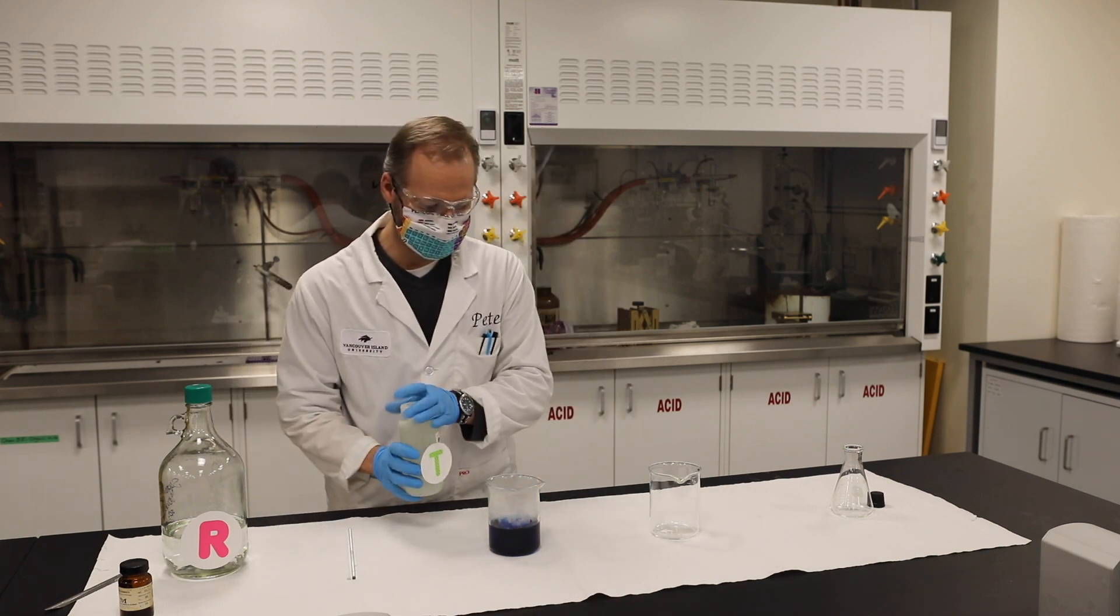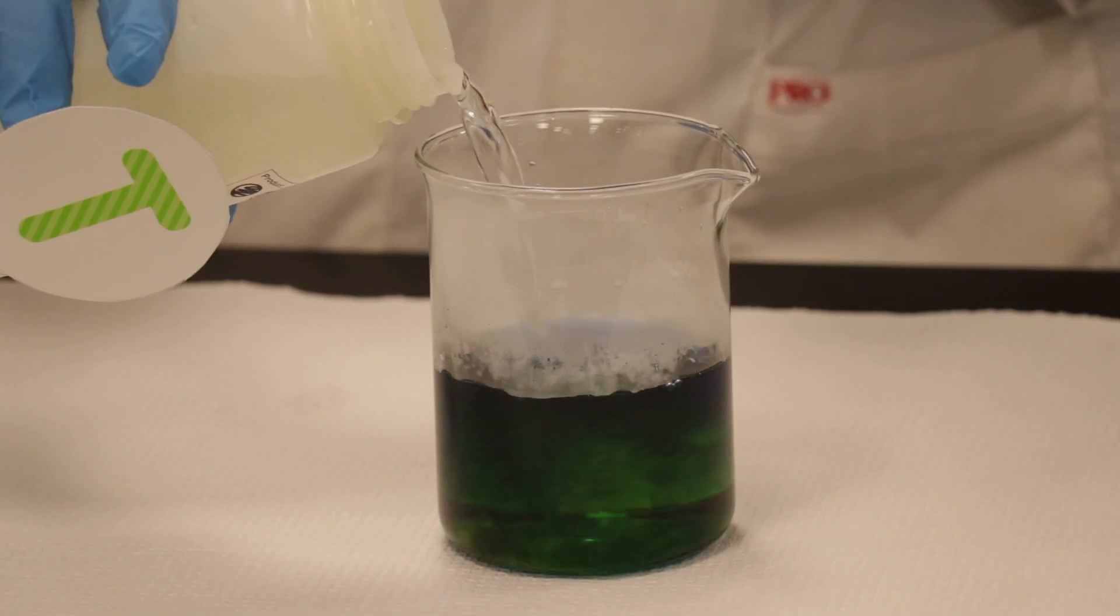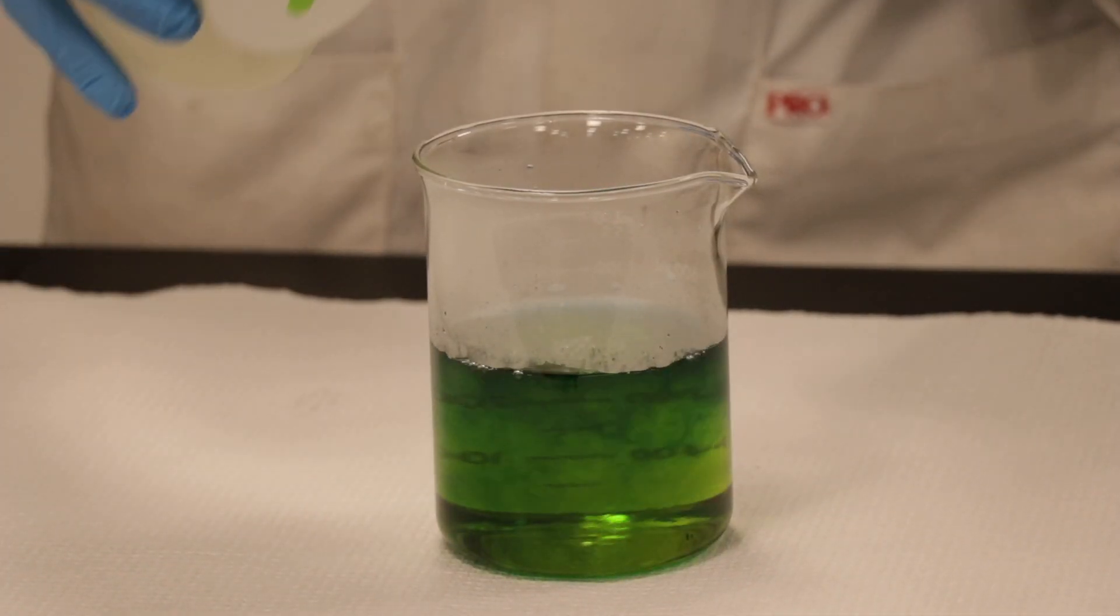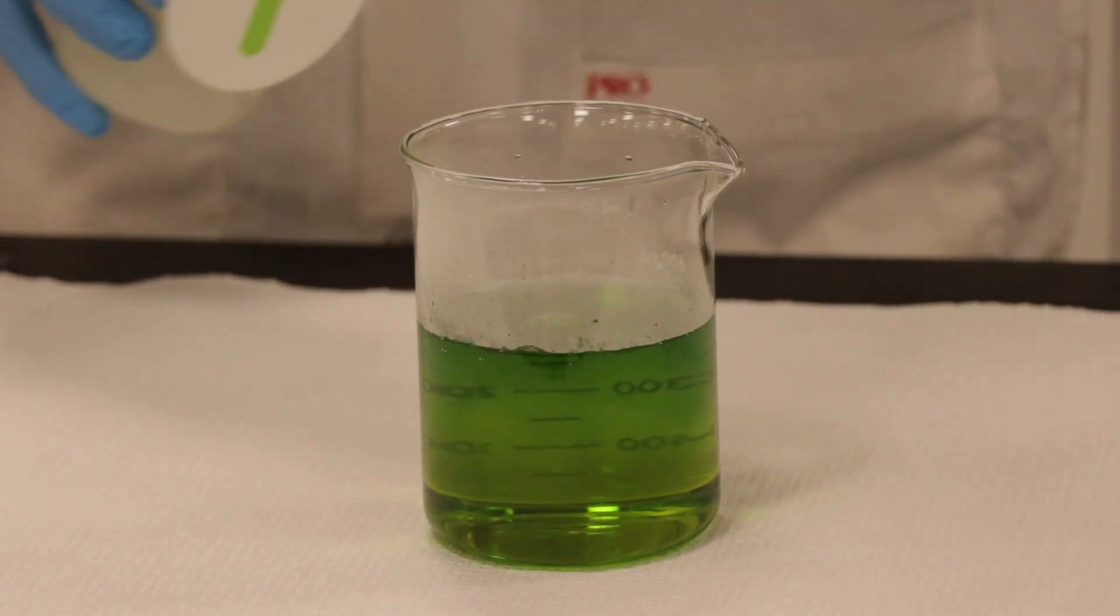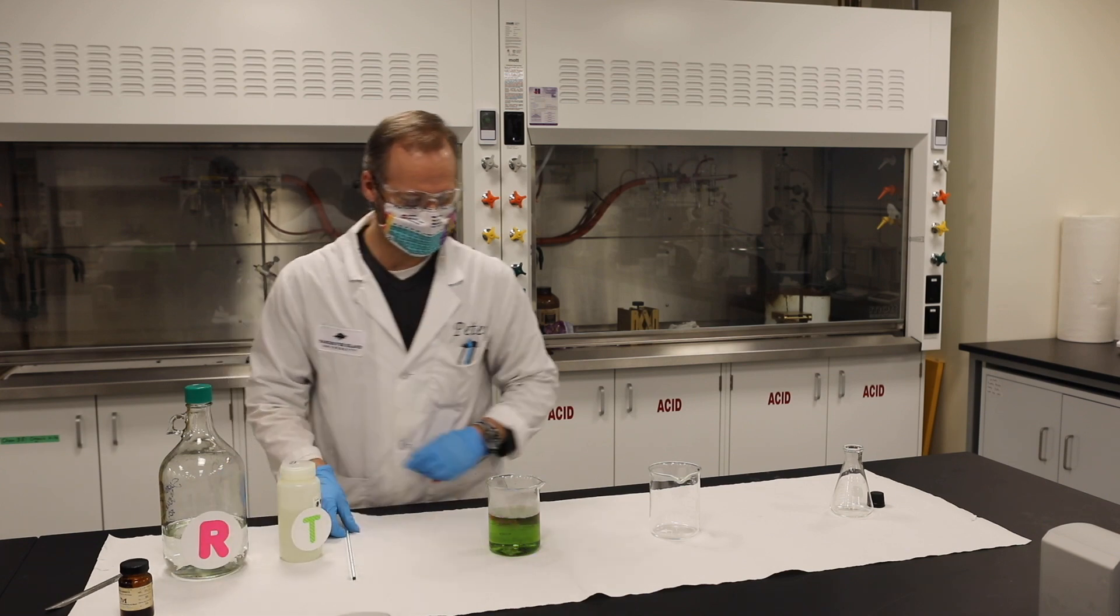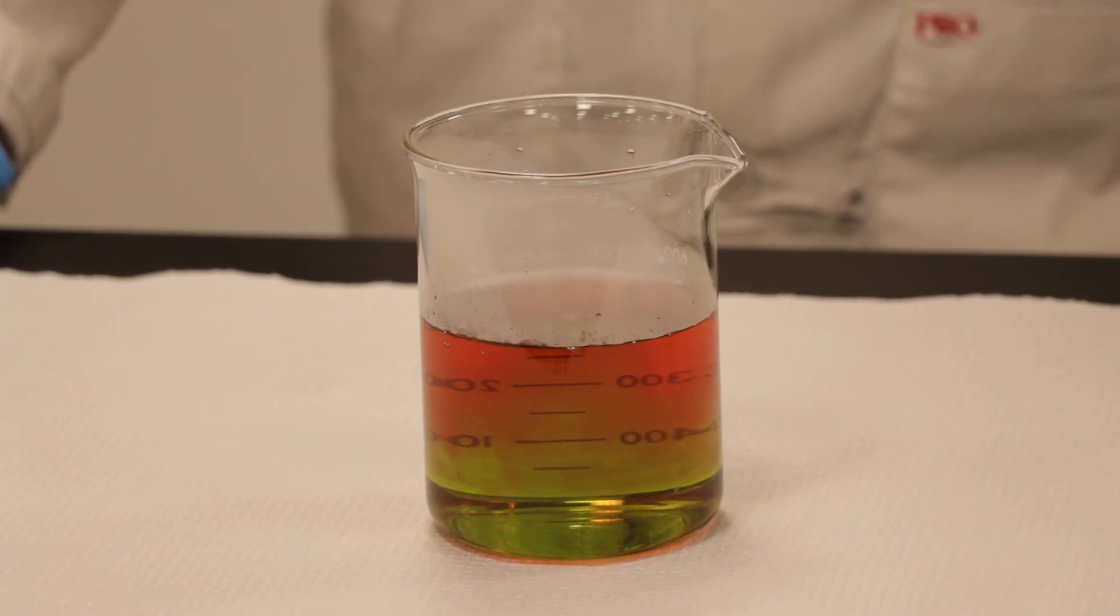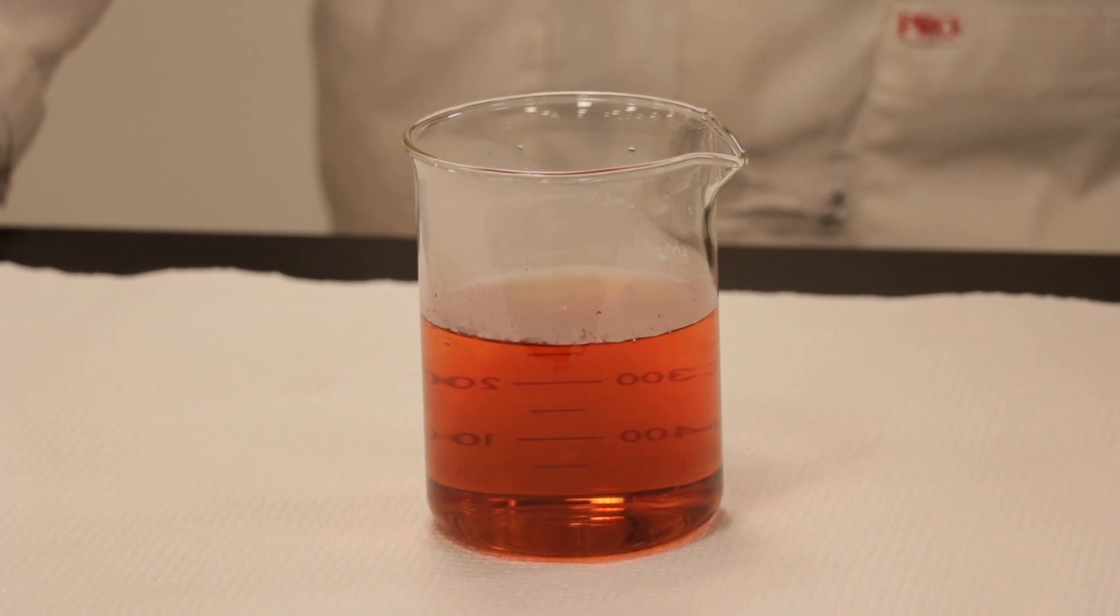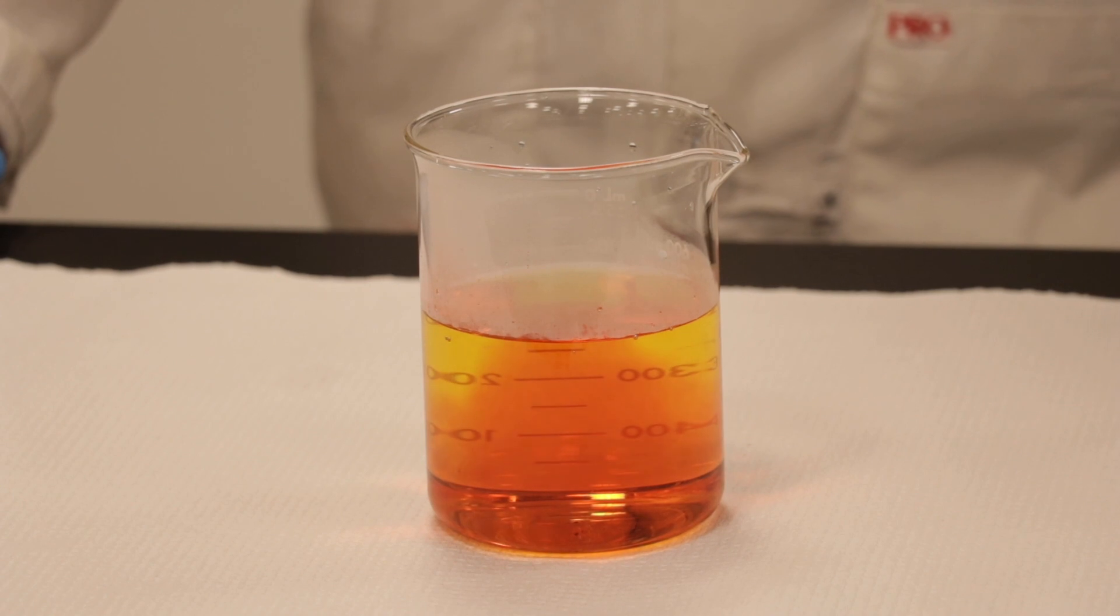Now we're going to add a bit of base, about 80 mils. So now what we've got to do is just wait a minute for it to cycle through. So you have the green, got the red, and it should go to a nice yellow.